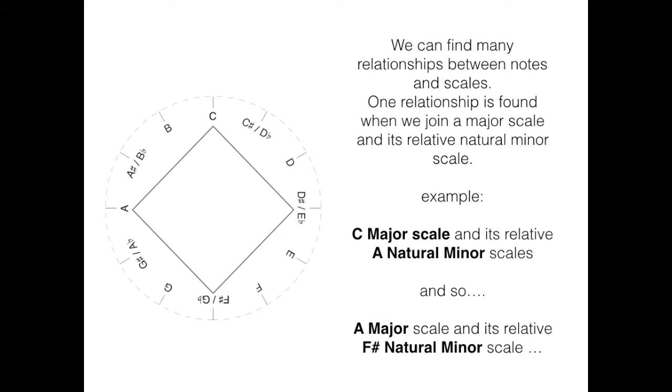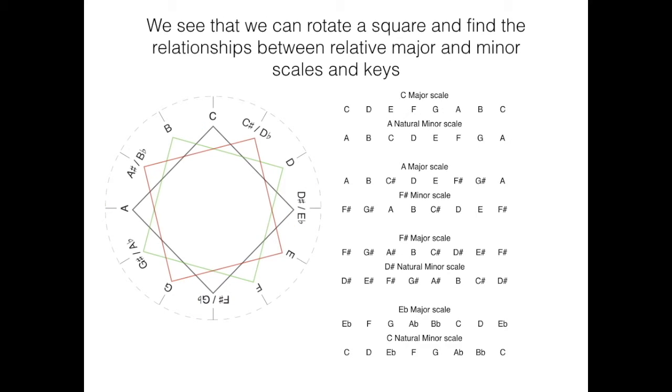One relationship is found when we join a major scale and its relative natural minor scale. For example, when we start with a C major scale and its A natural minor scale, we move on to the A major scale and its F sharp natural minor scale. From there, we move to the F sharp major scale to the Eb natural minor scale. And from the Eb major scale, we fall back into the C natural minor scale. See that we can rotate a square and find the relationships between relative major and minor scales and keys.